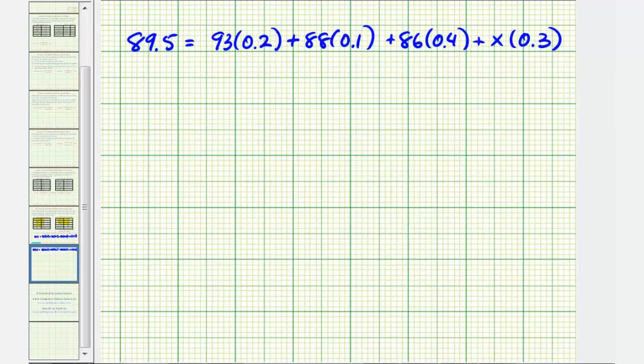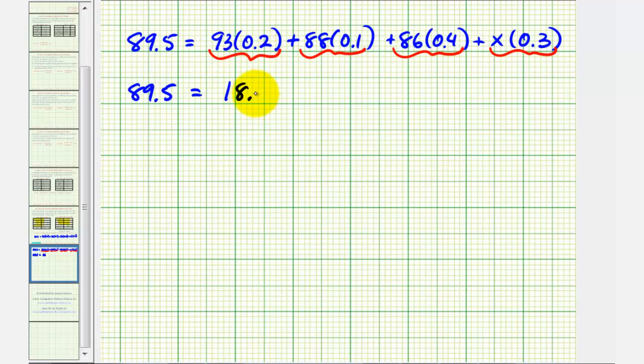Let's begin to simplify the right side of this equation. So we'll find this product, this product, this product, and this product. So we'll have 89.5 equals 93 times 0.2 is equal to 18.6, plus 88 times 0.1 is equal to 8.8, plus 86 times 0.4 is equal to 34.4, plus X times 0.3 is equal to 0.3X.